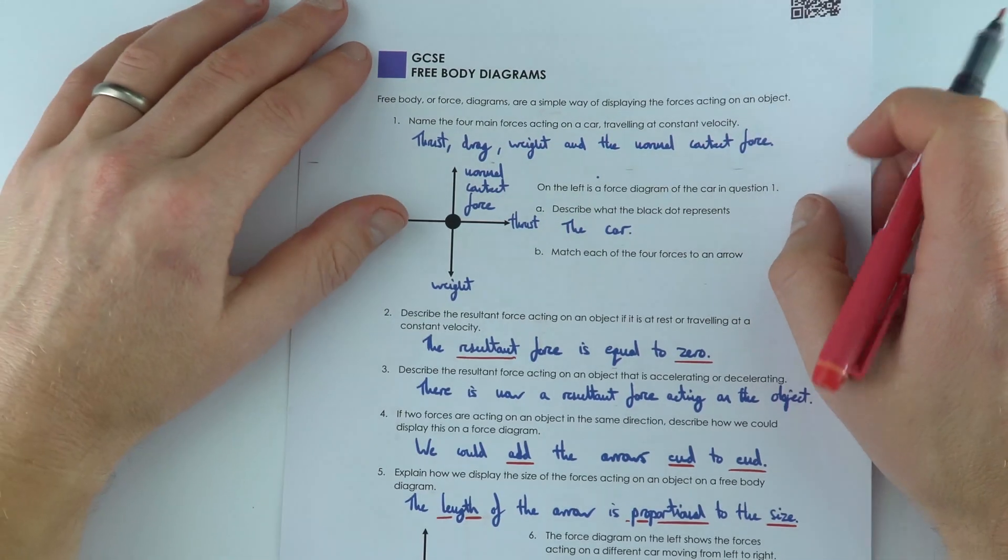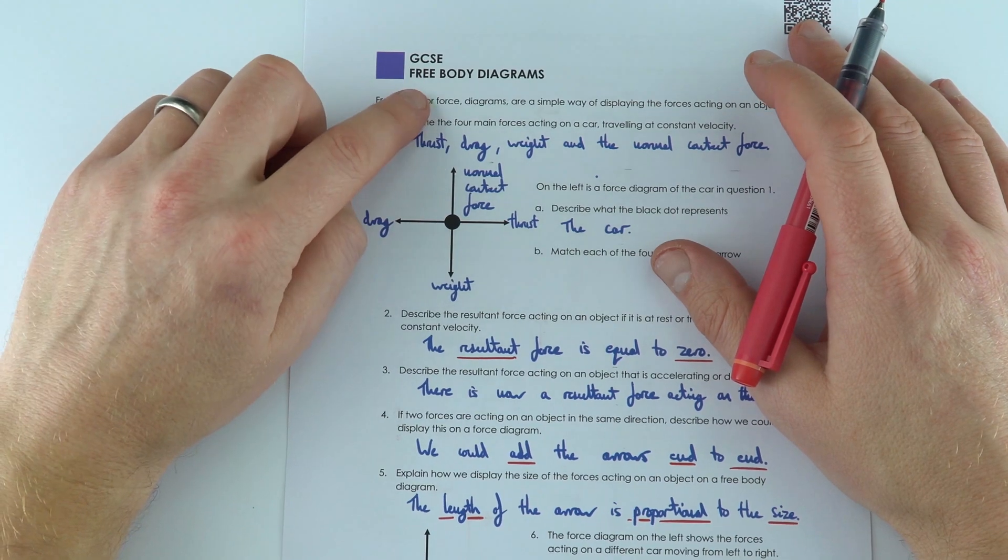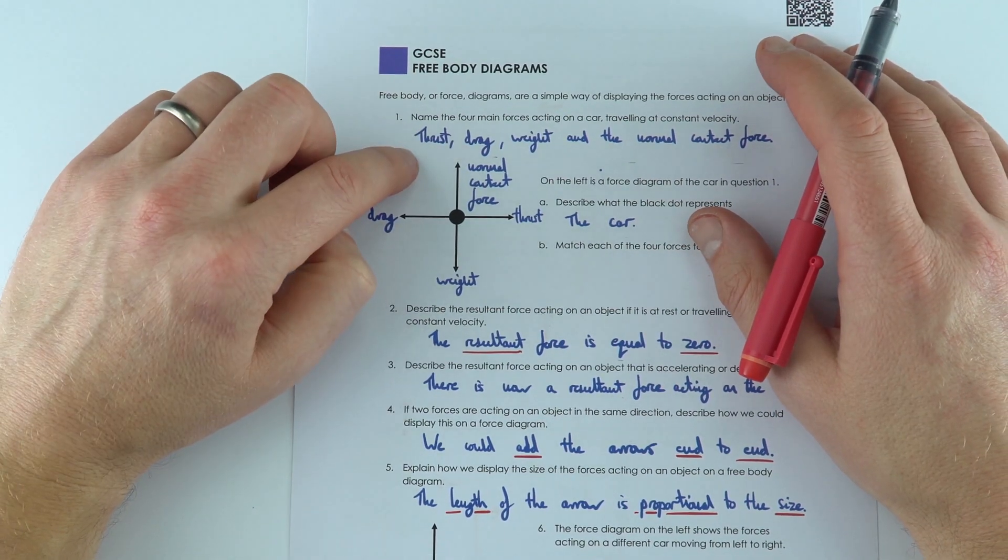So that's some free body diagrams which are just ways that we can draw diagrams to show the forces acting on objects.